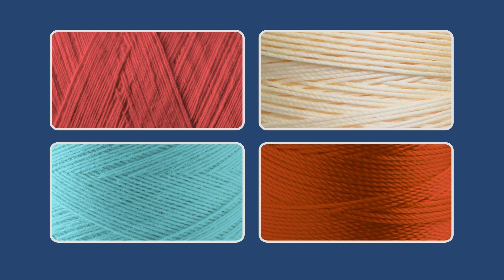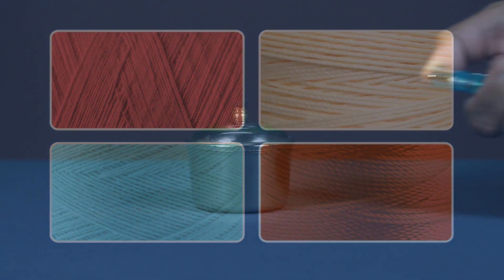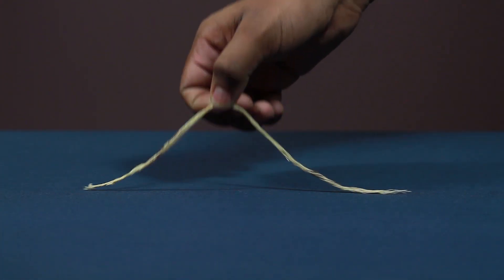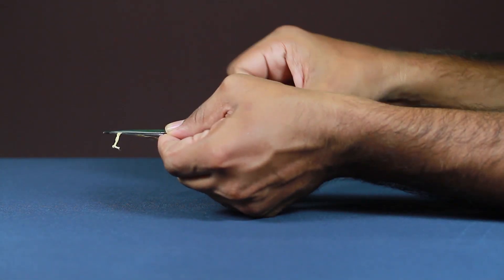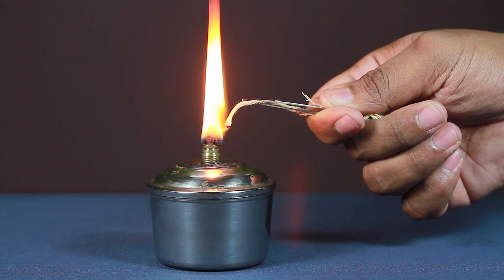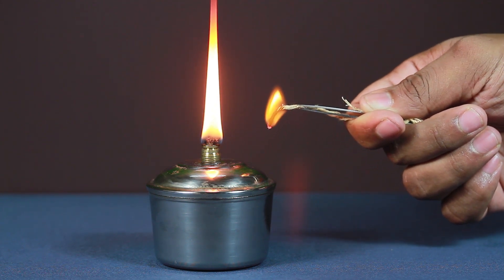Procedure: collect different samples of both natural and man-made fibers. Light the spirit lamp. Take a sample thread, say wool, and hold it with the forceps. Burn it in the flame of a heating device and observe.